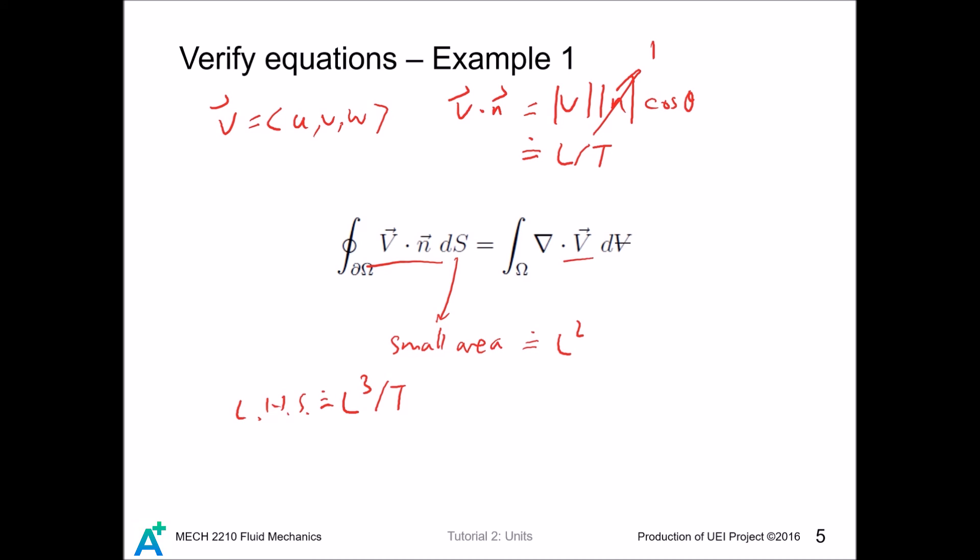For the right-hand side, the divergence of the velocity vector is defined as del dot V. So, each of these terms has length divided by time on the numerator and is further divided by length. So, it has dimension of 1 divided by time. And this term is small volume. So, it has dimension of length to the cube. So, we conclude that the right-hand side has also dimension of length to the cube divided by time. And that equals the left-hand side. So, the divergence theorem makes sense.